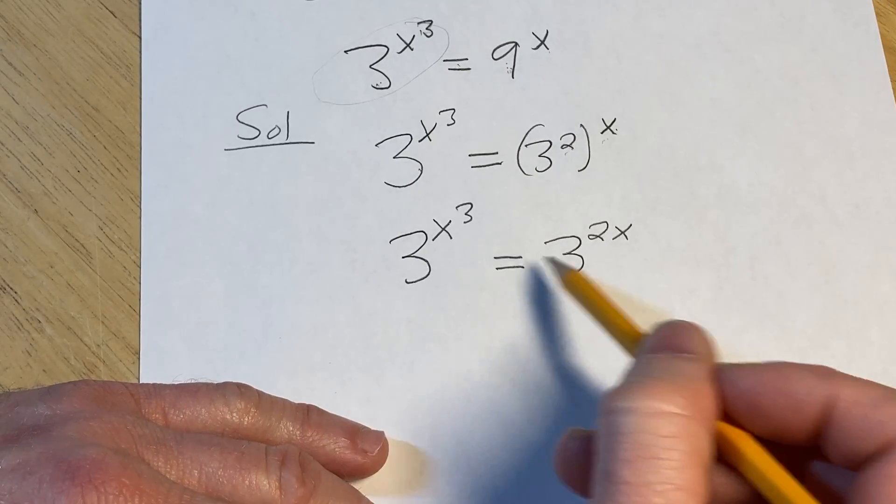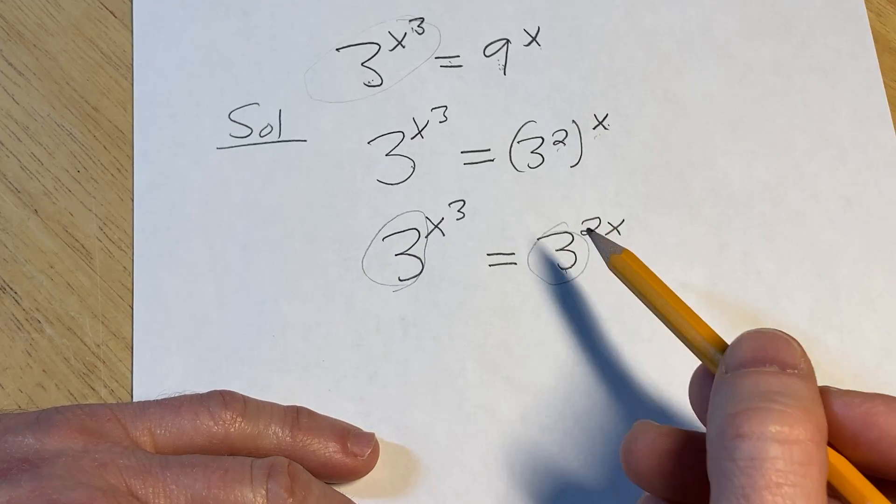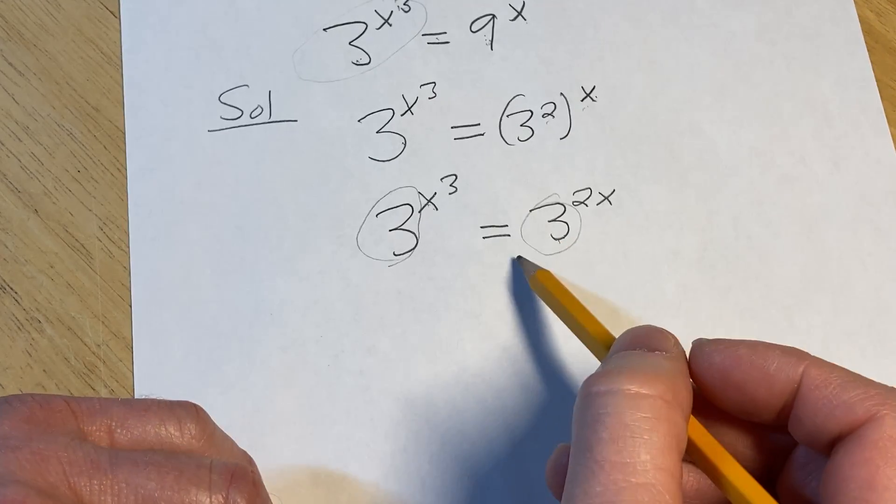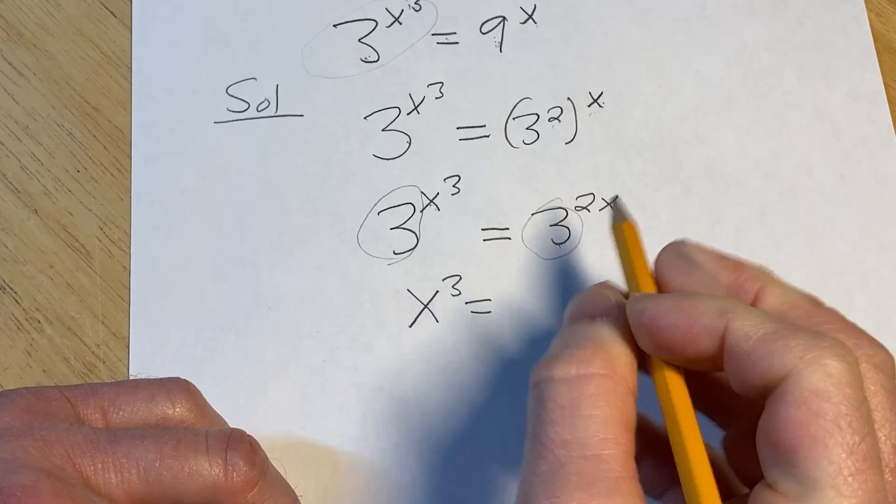So now we have the same base on both sides. We have a 3 here, and we have a 3 here, and we have an equation. Whenever you have that, you can just drop the bases and set the exponents equal to each other. So this ends up being x cubed equals 2x.